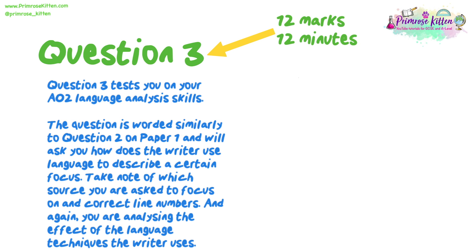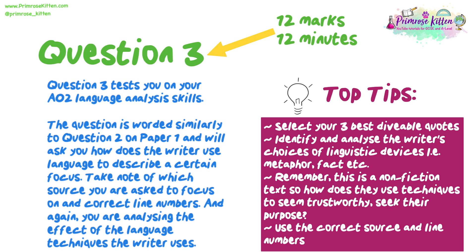Question 3 is worth 12 marks, so about 12 minutes on this question. It tests your AO2 language analysis skills, and is worded similarly to question 2 on Paper 1 — asking how does the writer use language to describe a certain focus. Take note of which source you are asked to focus on and the correct line numbers. You are analysing the effect of the language techniques the writer uses. Top tips: select your 3 best quotable quotes; identify and analyse the writer's choices of linguistic devices such as metaphors and fact; remember this is a non-fiction text, so consider how they use techniques to seem trustworthy or to achieve their purpose; and remember to use the correct source and line numbers.